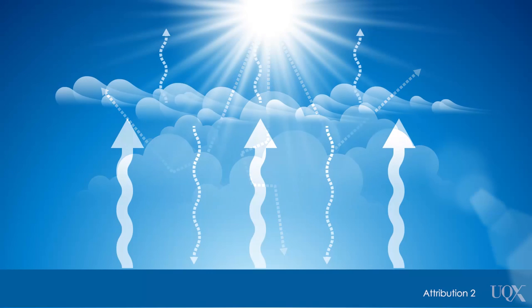By contrast, higher, thinner clouds don't reflect a lot of sunlight, but they do trap heat through the greenhouse effect. Both cloud types have a cooling albedo effect and a warming greenhouse effect. But for low clouds, the cooling effect is much stronger, and for high clouds, the warming effect is stronger.